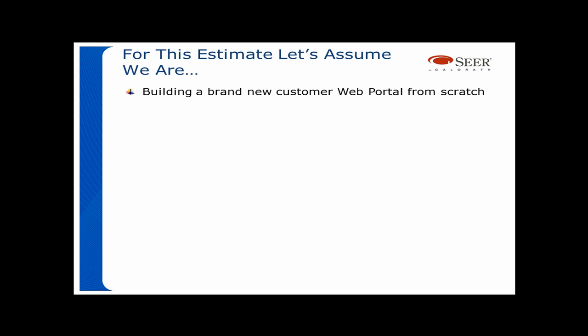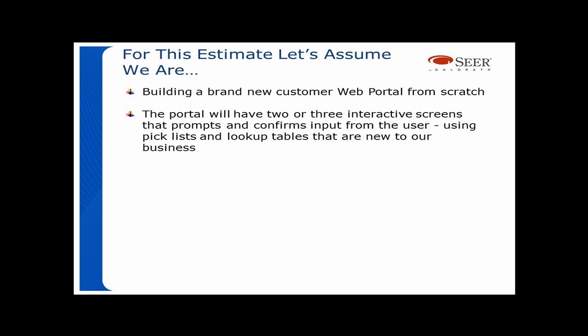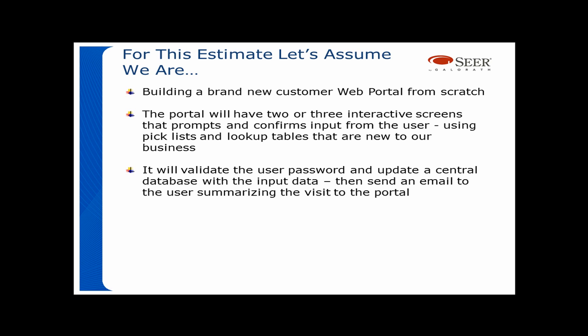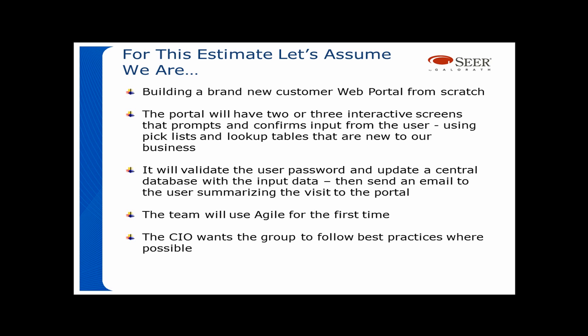For this estimate, let's assume we are building a brand new customer web portal from scratch. The portal will have two or three interactive screens that prompt and confirm input from the user using pick lists and lookup tables that are new to our business. It will validate the user password and update a central database with the input data, then send an email to the user summarizing the visit to the portal. The team will use agile for the very first time; however, the CIO wants the group to follow best practices where possible. That's it — this is everything we need for the estimate.